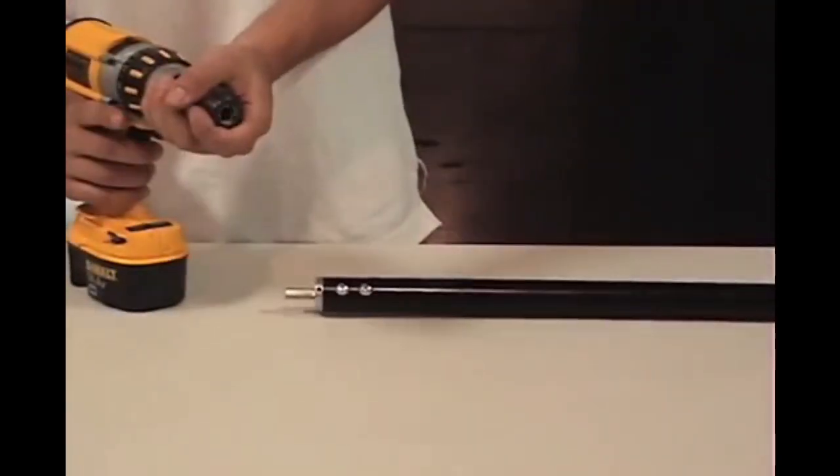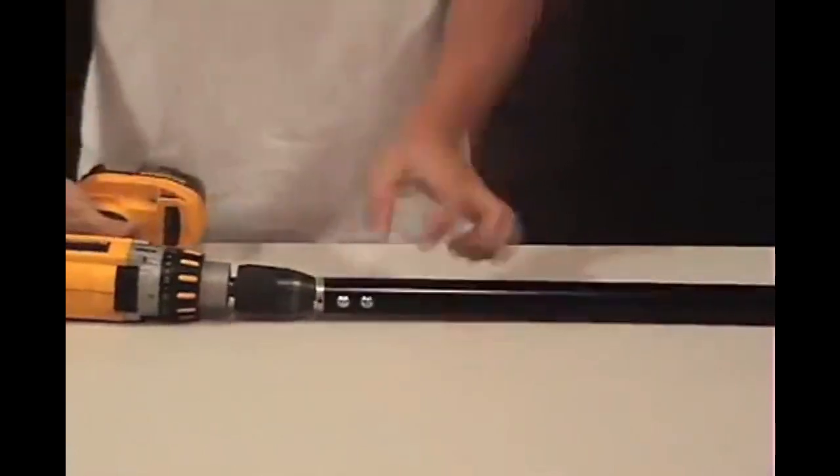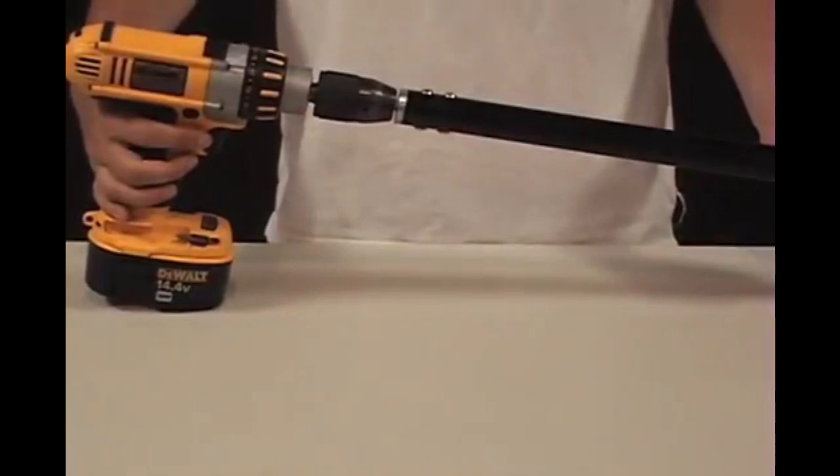To attach a standard drill, loosen the chuck, insert the hex driver of the pole, and tighten the chuck. You are now ready to use the lag pole.